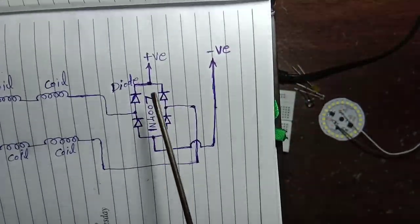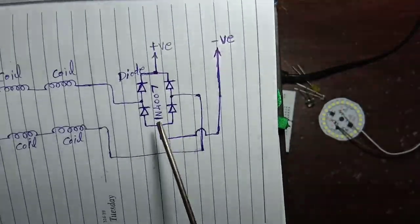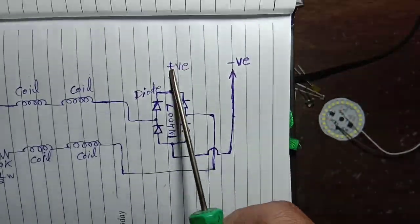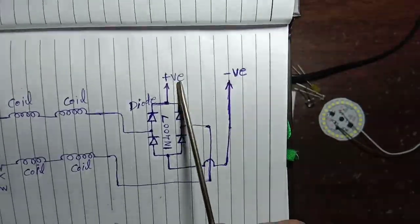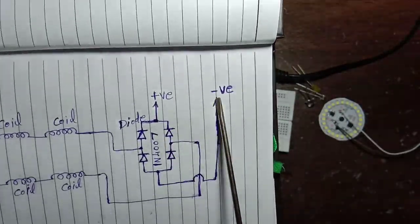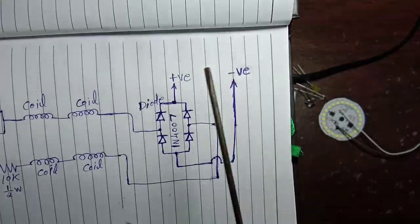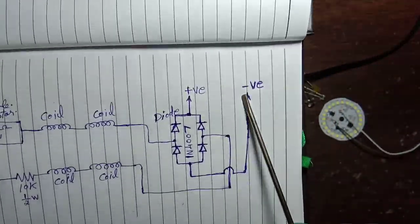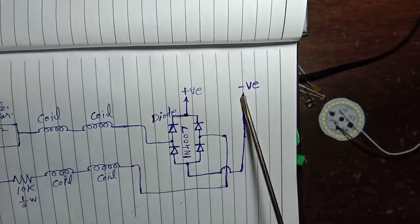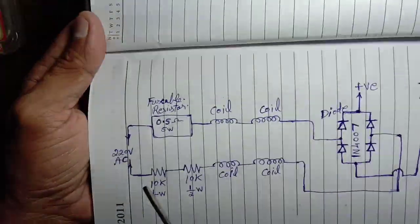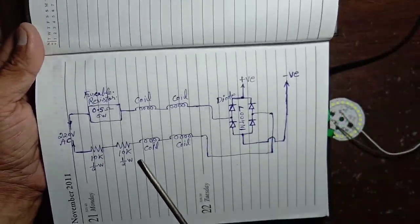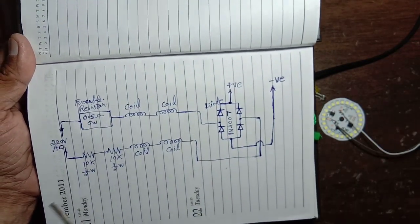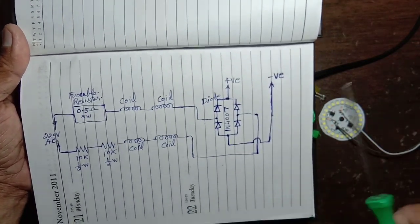From the bridge rectifier you get one positive and one negative output. From this positive and negative we can check any LEDs — single LED or more than one LED. This is a small, simple circuit.